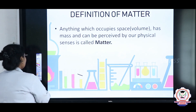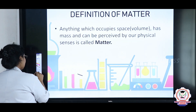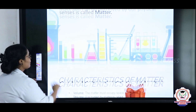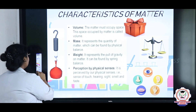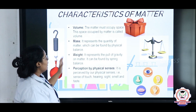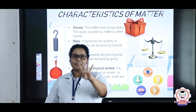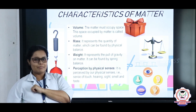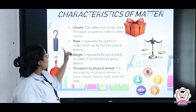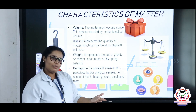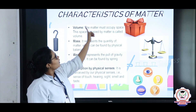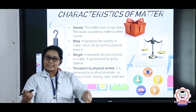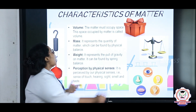Matter can be explained in four different major parts. First, we'll see the characteristics of matter. The first characteristic is volume. What is volume? The space occupied by the matter is called volume.